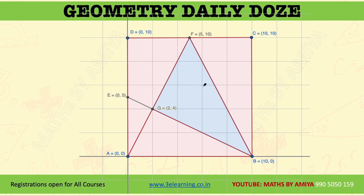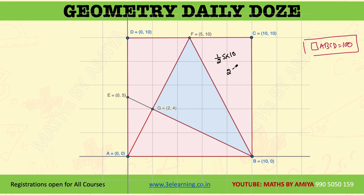Since the side is 10, the area of parallelogram ABCD is 100 units. Now, the area of each section: from one side to the other the length is 5 and the height is 10, so the area of that triangular part is 5 × 10 ÷ 2 = 25 units, which is one-fourth of the parallelogram. The area of triangle AGB: the base is 10 and the height (Y coordinate of G) is 4, so 10 × 4 ÷ 2 = 20 units, or one-fifth of the parallelogram.